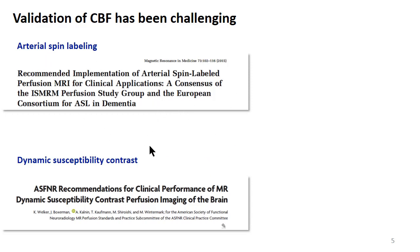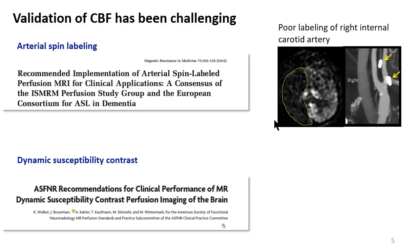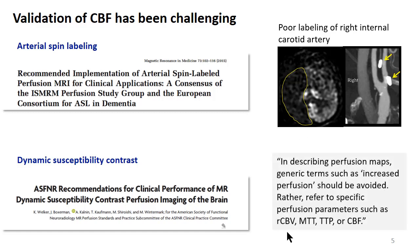The work is not done, because even in these highly cited consensus papers, they can't cover all cases. For instance, in the ASL consensus paper, an individual case with a stent in the internal carotid artery can cause poor labeling and contribute to a misdiagnosis of hypoperfusion. In DSC, there's sometimes not even consensus on how clinicians describe perfusion — whether increased perfusion refers to cerebral blood volume, transit time, or cerebral blood flow. We need to work harder to validate these different perfusion metrics.